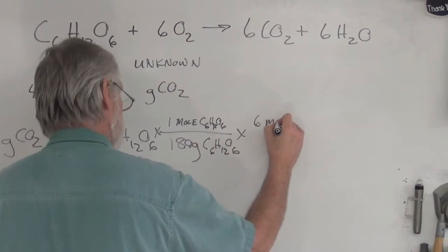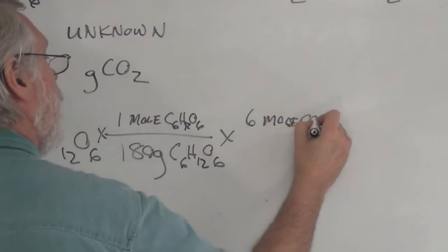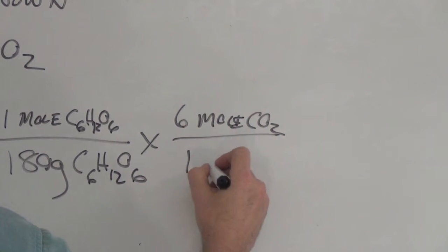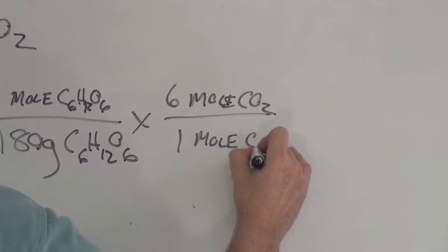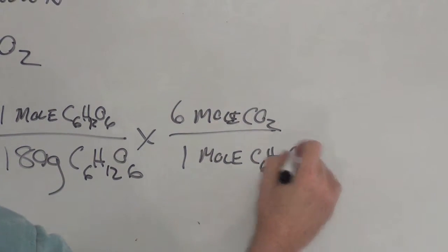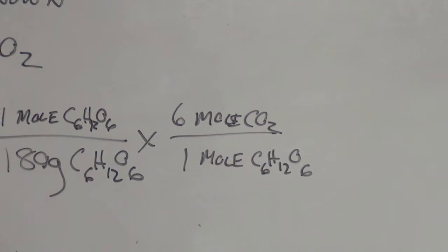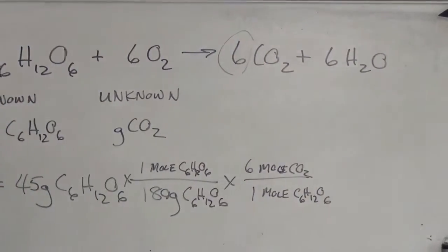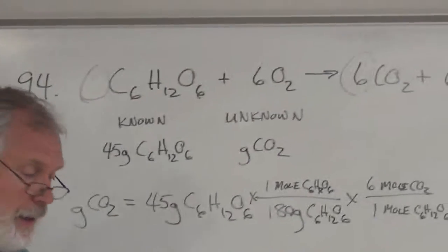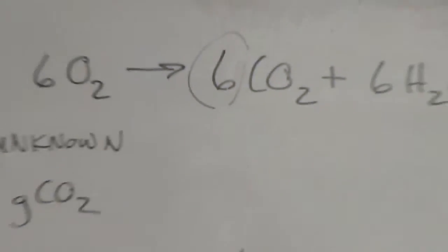And then 6 moles of CO2 for every 1 mole of C6H12O6. And we know that by looking up here. See? Just a 1 over here and a 6 over here. That's the mole ratio. That's what we got from a balanced chemical equation.